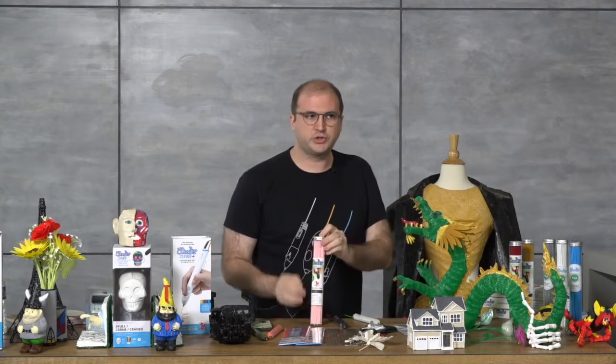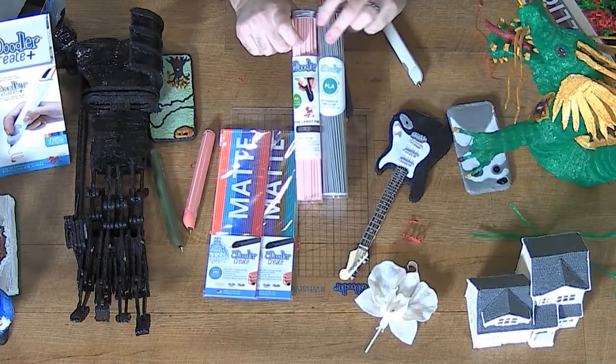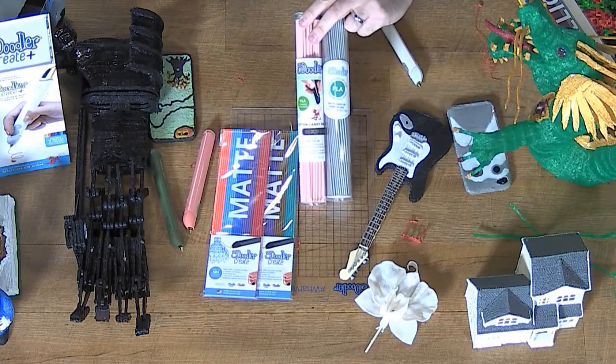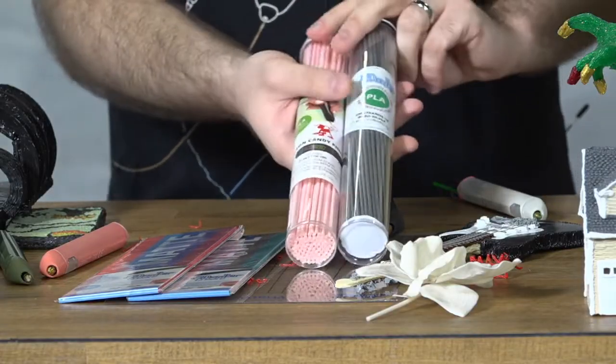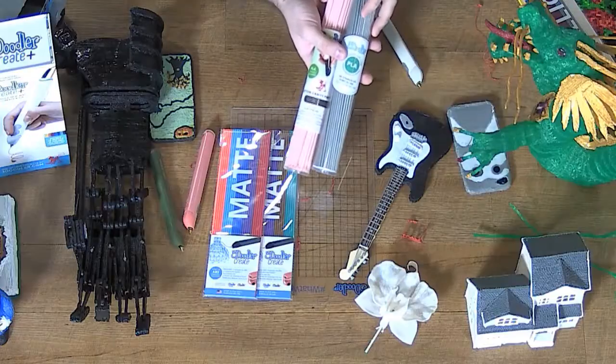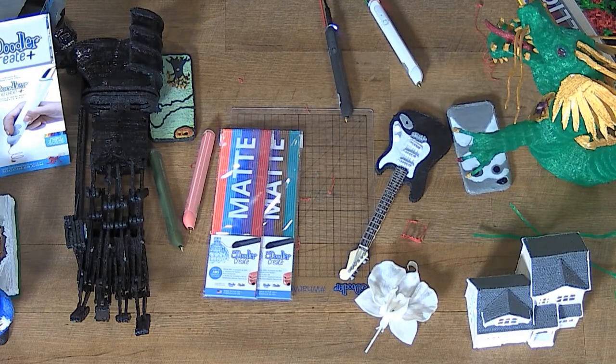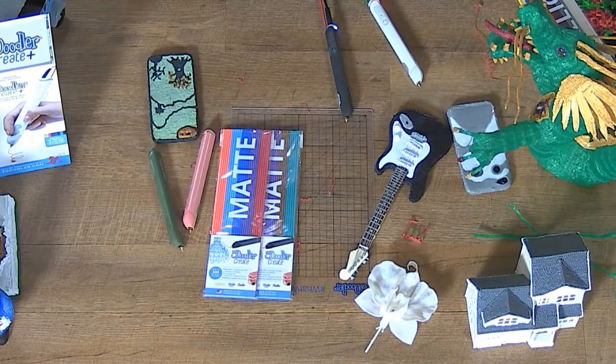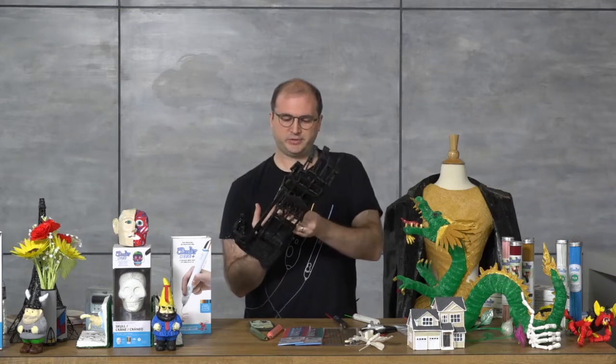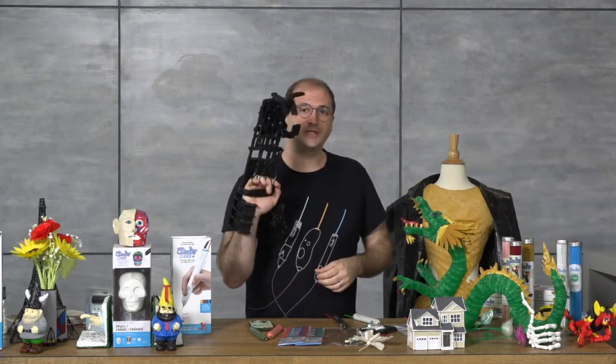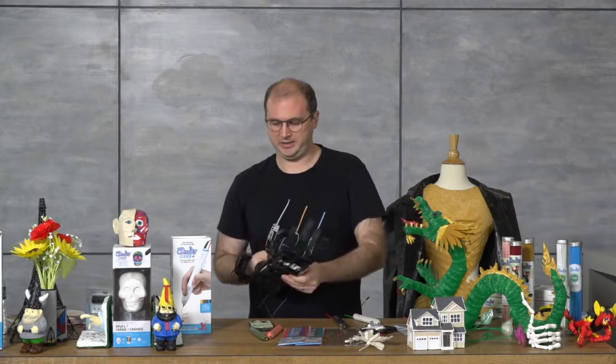But for some of the more heavy users, we have tubes of plastic. So we have individual tubes that you can get with 100 strands of plastic, and these are a bit better price. It's $24.95 on Amazon.com. And we have them in solid colors only. But it's a great way if you're going through a lot of plastic, you want to do a really big project, you want to get something going for Comic-Con or for Halloween, you can really use the 3Doodler to bring your project to life.